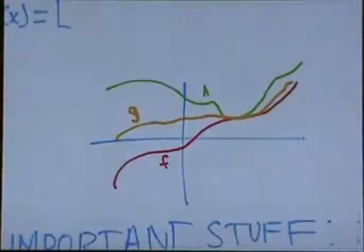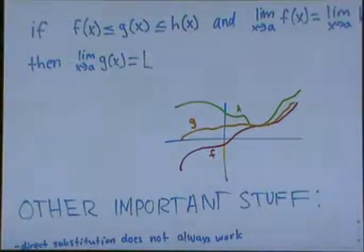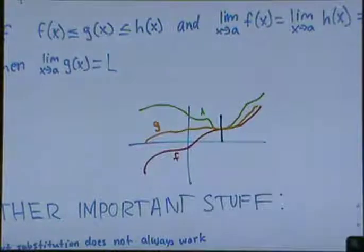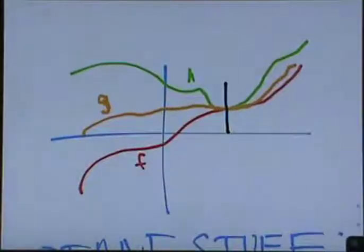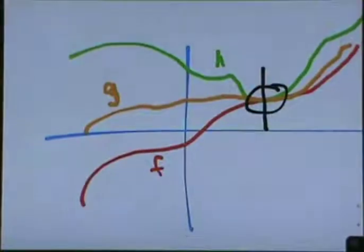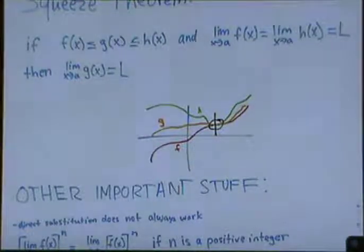If you look at this graph, the squeeze theorem works as follows: f(x) is always less than or equal to g(x), which is always less than or equal to h(x). If the limit as x approaches a of f(x) equals the limit as x approaches a of h(x), you create a sandwich — the middle function is squeezed in between. So if the limit of f(x) and the limit of h(x) both equal L, then the limit as x approaches a of g(x) is also L.